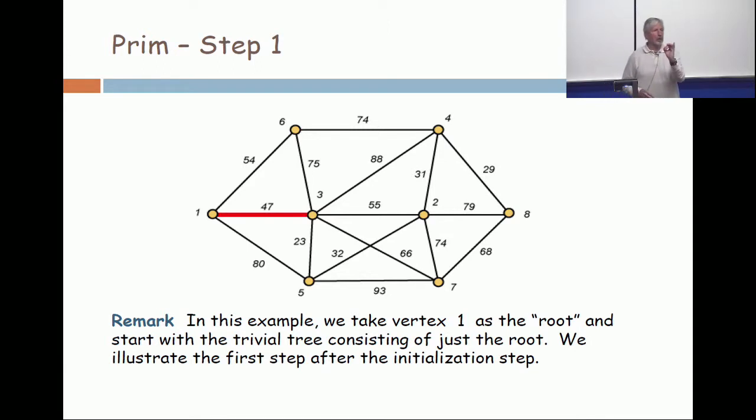So, here's node one. And what I do is I look at all the edges which have one end point at one and the other one other than one and take the cheapest one. There are three edges incident with one, 54, 47, and 80. And I take 47. Is that clear? First step. There are three edges.